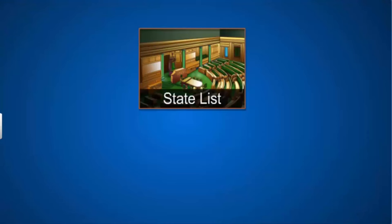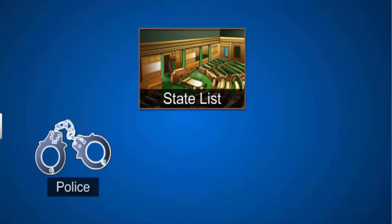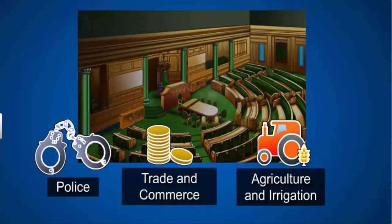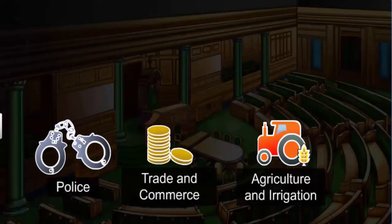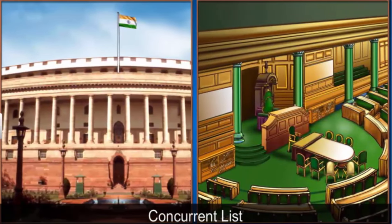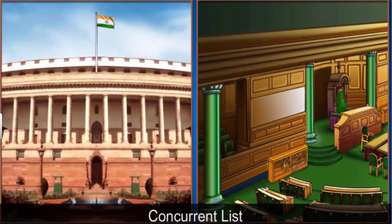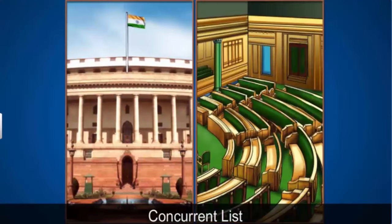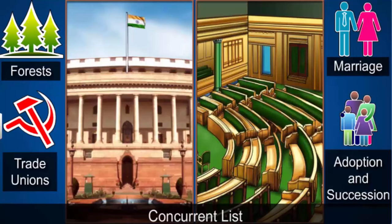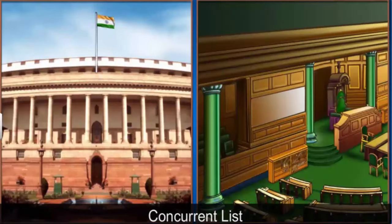The State List consists of 66 subjects of state and local importance such as police, trade, commerce, agriculture, and irrigation. State legislatures alone can make laws on State List subjects. The Concurrent List includes subjects of common interest to both the union and state governments — for example, forests, trade unions, marriage, adoption, and succession. Both can make laws on Concurrent List subjects, but in case of conflict, the union government's laws are given more importance.